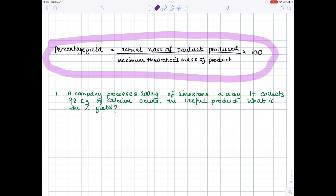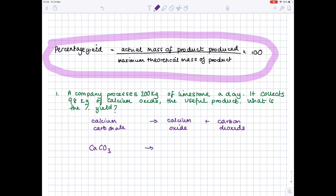In question one, a company processes 200 kg of limestone a day and collects 98 kg of calcium oxide, the useful product. What is the percentage yield? As always, we need a balanced symbol equation. Limestone is calcium carbonate, producing calcium oxide as the useful product plus carbon dioxide. So CaCO₃ → CaO + CO₂. Double check that it's balanced — yes, it is.